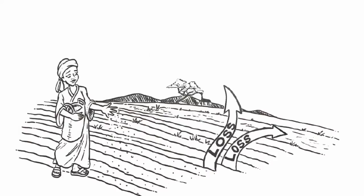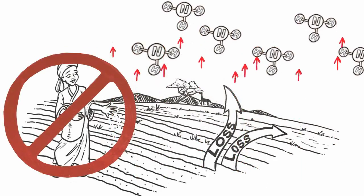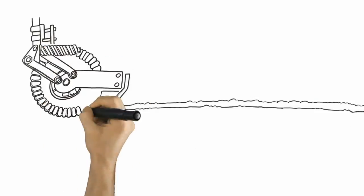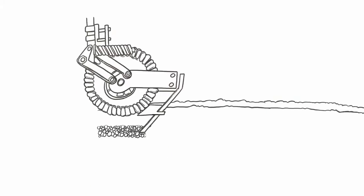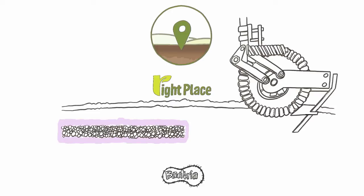Farmers adhering to 4R also avoid spreading nitrogen sources on the soil surface, where it can be converted to ammonia and lost to the atmosphere. Using the BMP of concentrating fertilizer application in a narrow band under the soil surface keeps the bacteria from quickly converting the nitrogen to nitrate. This is right place in practice.